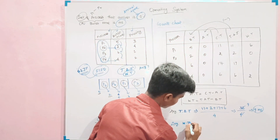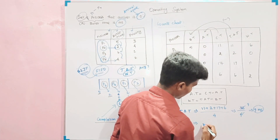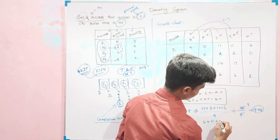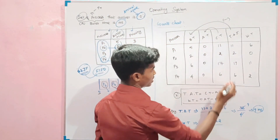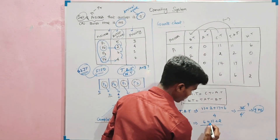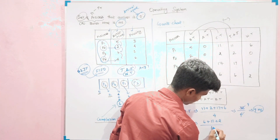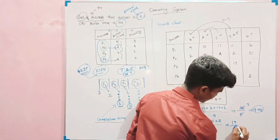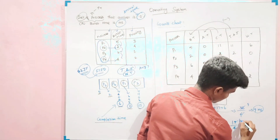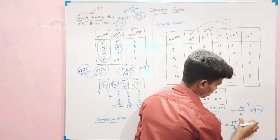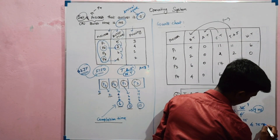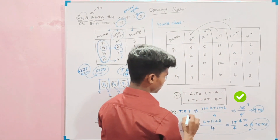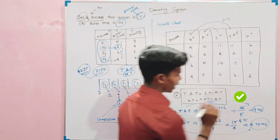Average waiting time: 6 plus 0 plus 11 plus 2, divided by 4. That is 19 divided by 4, which equals 4.75. So the average waiting time is 4.75 and the average turnaround time is 9.